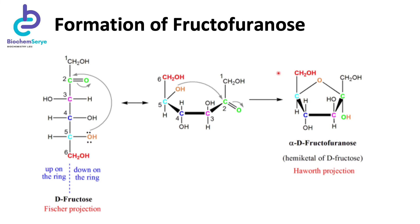In the first case, looking at the Fischer projection of D-fructose, the hydroxyl group attached to C5 attacks the carbonyl group at carbon 2 by nucleophilic attack, forming a hemiketal. The product is a five-membered ring — one, two, three, four, five — and this ring structure is known as a furanose.